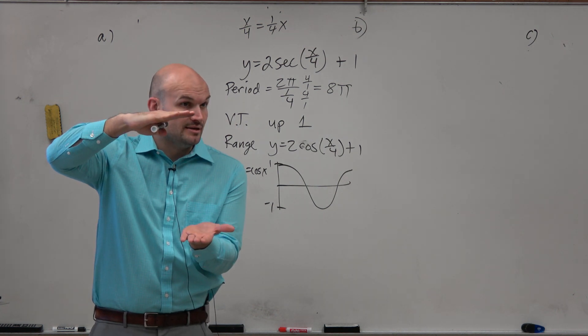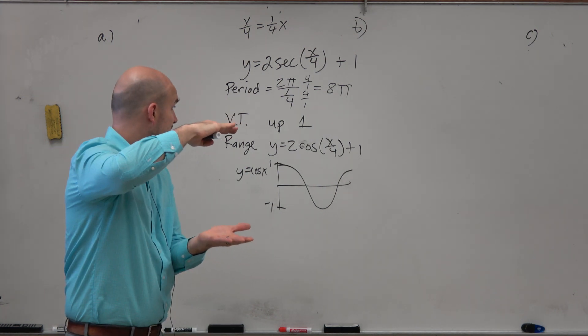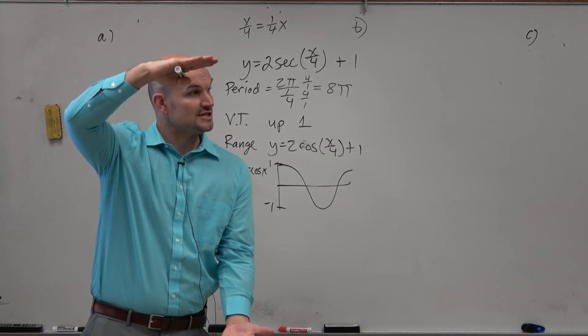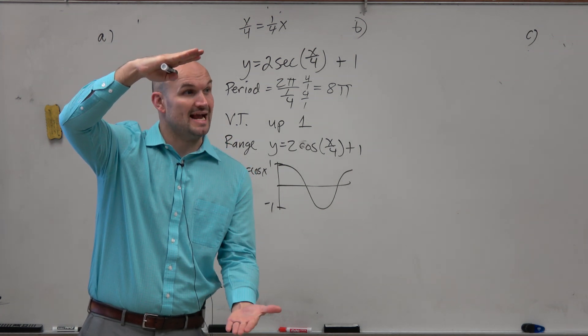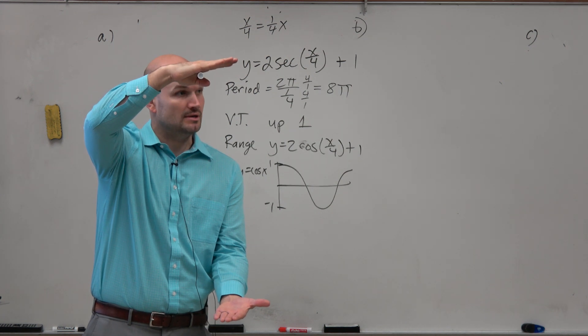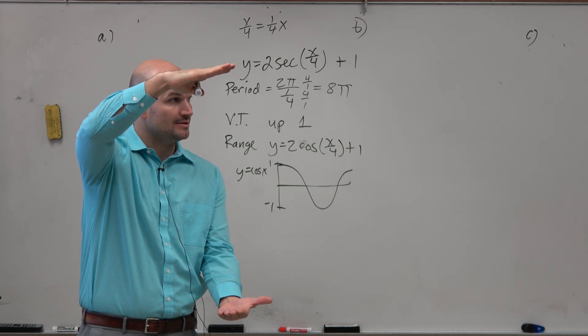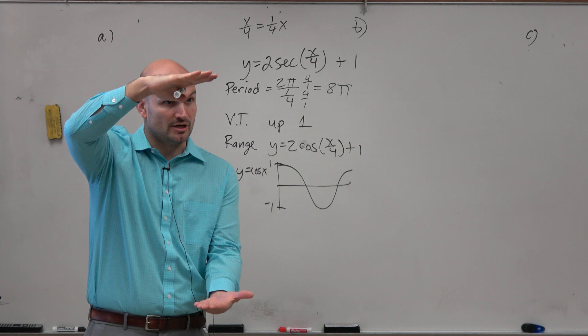That is the parent graph of cosine. So the parent graph of cosine has a range of negative 1 to 1. The lowest point is negative 1. The highest point is positive 1, right? And then last class period, we discussed that when you multiply that by 2, that vertically stretches the graph. Now the low point is negative 2. The positive point, or the highest point, is positive 2. Does everybody remember that?